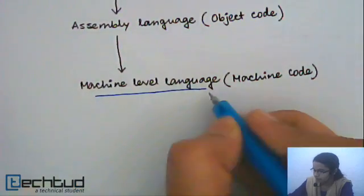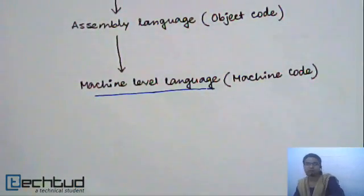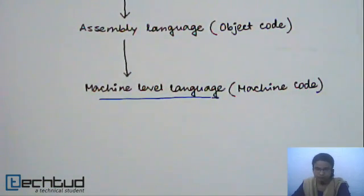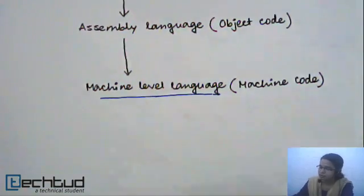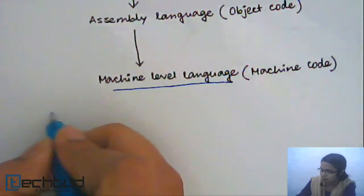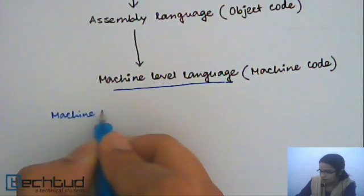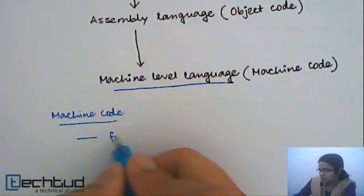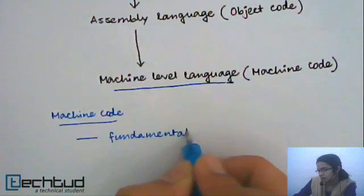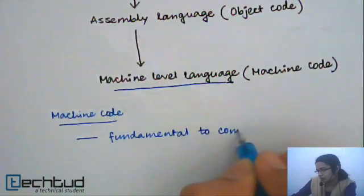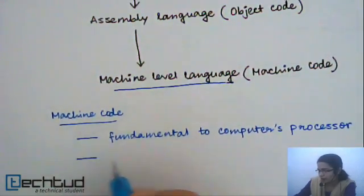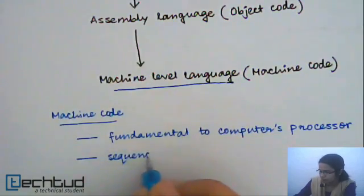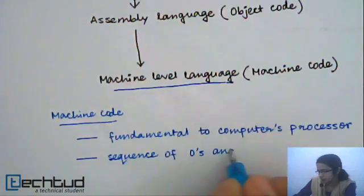What is machine-level language? It is the language which is fundamental to the computer's processor. The CPU directly understands this language because it is actually nothing but a sequence of 0s and 1s. It is fundamental to the computer's processor and is a sequence of 0s and 1s.